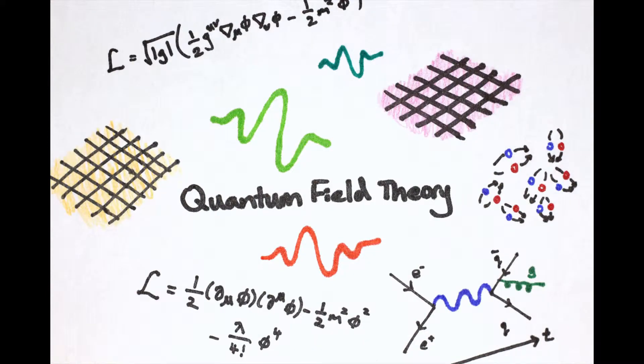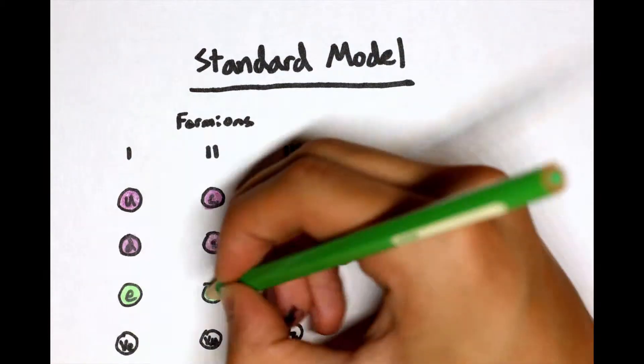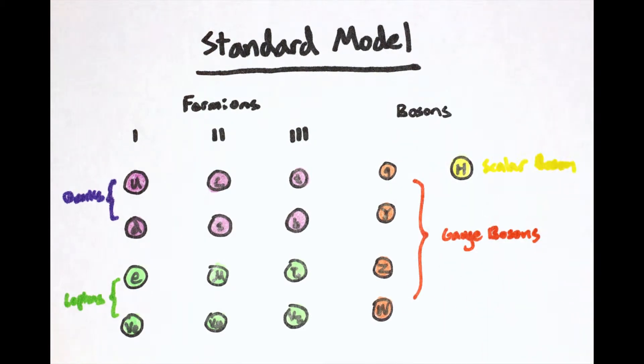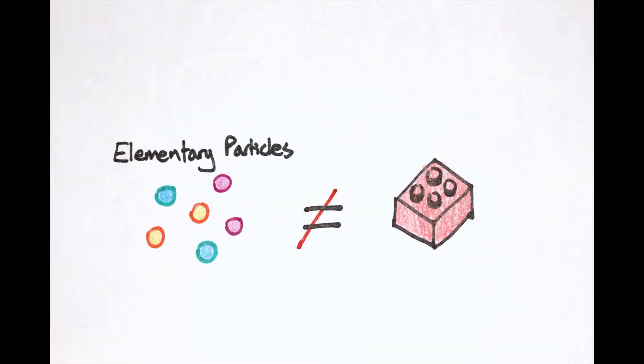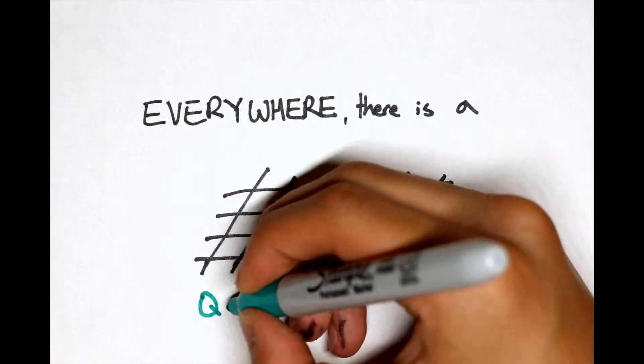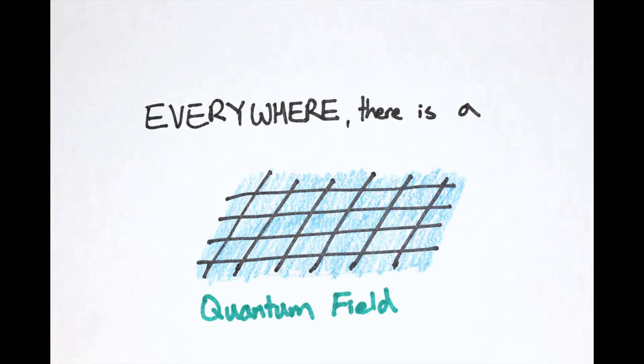Traditionally, we're used to thinking about subatomic elementary particles as being the fundamental building blocks that make up matter and forces as we know it. However, quantum field theory suggests that our universe isn't just simply made up of particle building blocks. Instead, it theorizes that every point in our universe is occupied by something known as a quantum field.